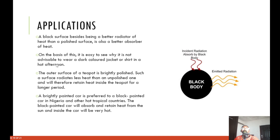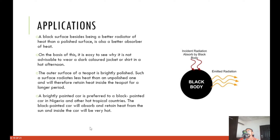Applications of radiation: a black surface, besides being a better radiator of heat than a polished surface, is also a better absorber of heat. It is easy to see why it is not advisable to wear a dark-coloured jacket or shirt in the hot afternoon. The outer surface of a teapot is brightly polished — such a surface loses less heat and therefore retains it inside for a longer period. A brightly painted car is preferred to a black painted car in Nigeria and other tropical countries, because a black painted car absorbs and retains heat from the sun, making the interior very hot.